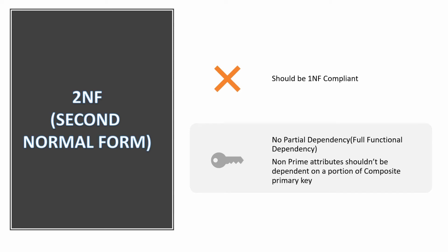Hi guys, this is the third video of the video series on normalization, and in this video we are going to talk about second normal form. For a table or dataset to be in second normal form, there are two prerequisites: the dataset should be first normal form compliant, and there should not be any partial dependency — that is, non-prime attributes should not be dependent on a portion of the primary key.